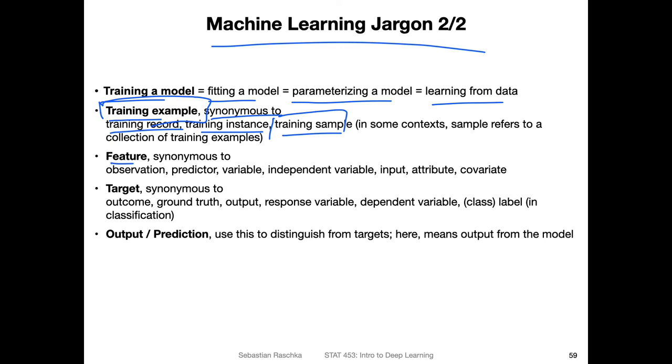So the term training example. Then the term feature is also synonymous to observation or predictor variable, independent variable, input, attribute, covariate. So in other statistics classes we are often using the term, for example, predictor and things like that, or even covariate. So here in machine learning and deep learning we usually use the term feature. Then we have the term target, which is synonymous to outcome, ground truth, output, response variable, dependent variable. And then in the specific context of classification we also say class label or just label.